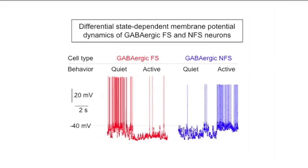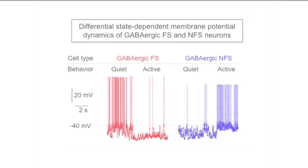Finally, we examined the modulation between the two groups of interneurons during periods of active wakefulness, i.e., when the mouse is engaged in active whisking. We observed a complete change in discharge rates between the two behavioral conditions and the two groups of GABAergic cells. On the left, the highly discharging fast-spiking interneurons saw their firing rates decrease, while on the right, an increase was observed in non-fast-spiking cells during active wakefulness.